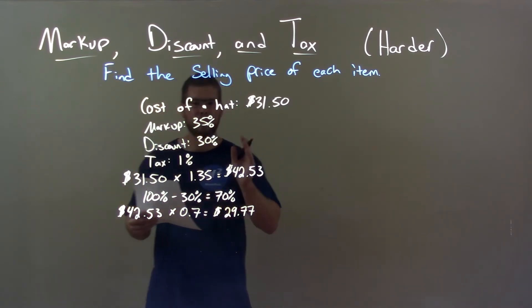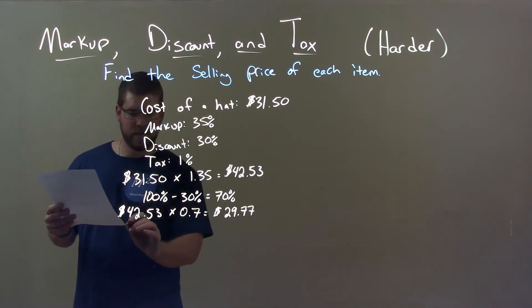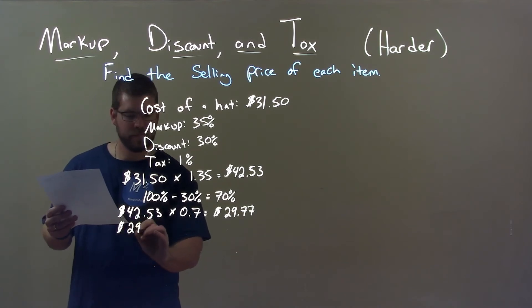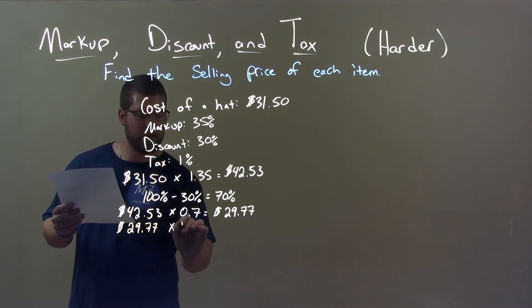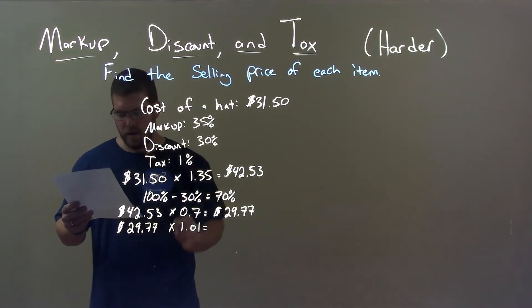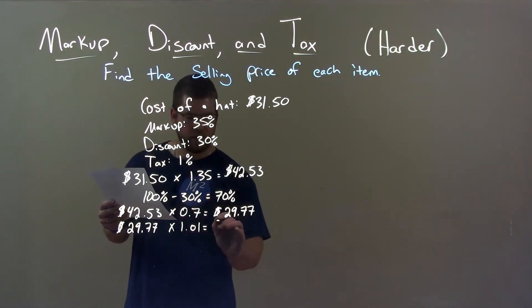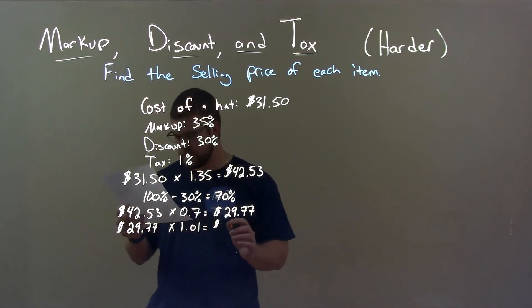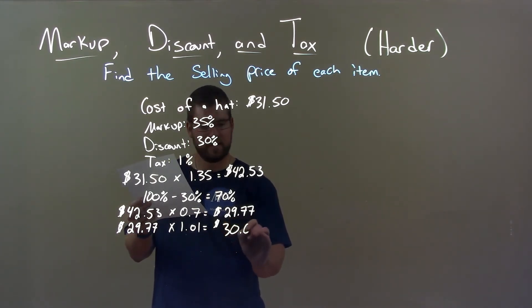Then from there we have to apply our tax. So we take the $29.77 and multiply that by 1.01 and we're left with a final answer after all discount, markups, and tax, not in that order necessarily, of $30.07.